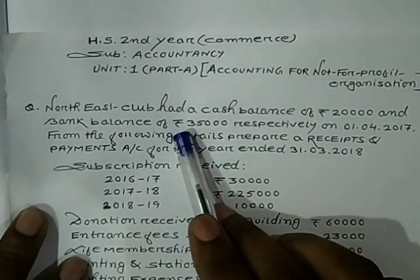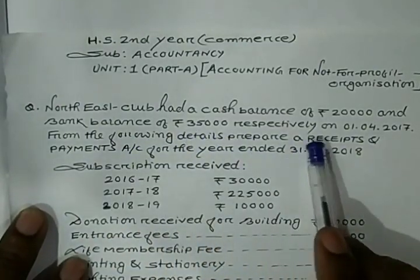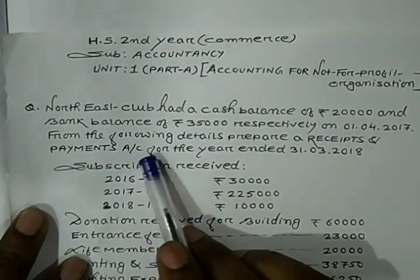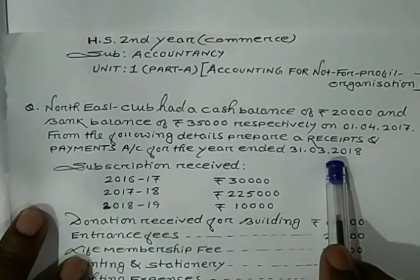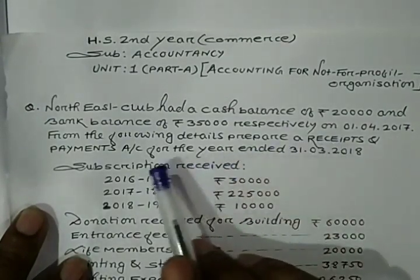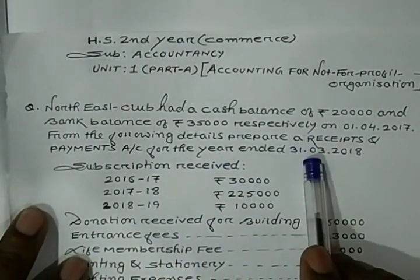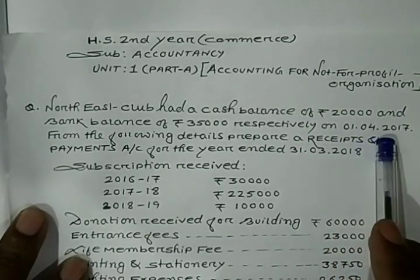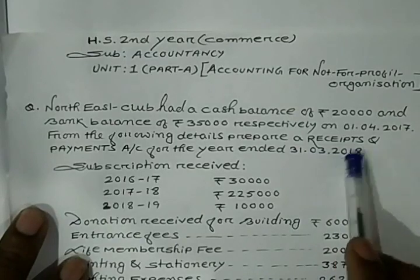From the following details, prepare a Receipt and Payment Account for the year ended 31st March 2018. The question asks to prepare Receipt and Payment Account for the year ended 31st March 2018. That means the period is from opening date 1st April 2017 to 31st March 2018. Now let's see what items are given in the question.